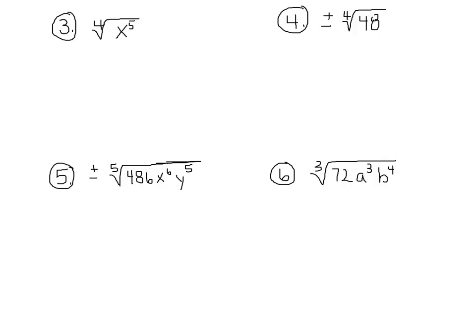For example 3, we have the 4th root of x to the 5th. Just because it's a variable, still go ahead and break it down. So x to the 5th breaks down as x, x, x, x, x times x. And then the 4th root, so that means I'm looking for a group of 4 of the same. And so that's going to come out as an x, and then I've got the 4th root of the other x. And that is your final answer.